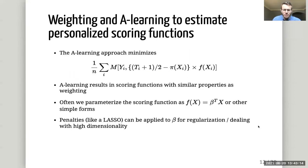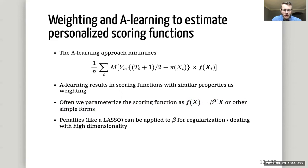The A-learning approach is very similar, but instead of weighting, the treatment is centered by the propensity score. In the personalized package, we often parameterize the scoring function as being linear or having some other simple form, and we often penalize the parametric terms in that form to help deal with high dimensionality.